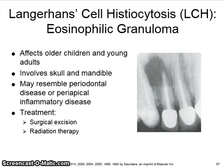Eosinophilic granuloma affects older children and young adults. It involves the skull and mandible and may resemble periodontal disease or periapical inflammatory disease. Treatment involves surgical excision and radiation therapy.